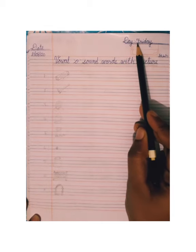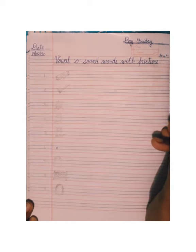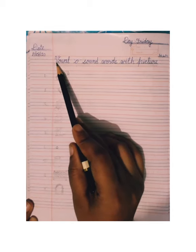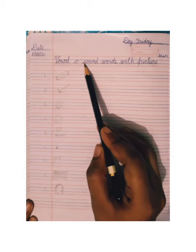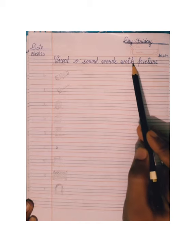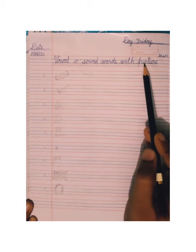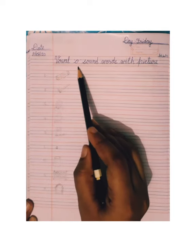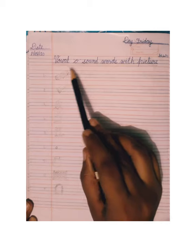This is your English notebook. You always remember that firstly you will mention date. So today's date is 21st of August 2020. Today is Friday — F R I D A Y. Then we will mention H W, meaning homework. Then we will mention the heading: vowel O sound words with picture, and draw the underline.